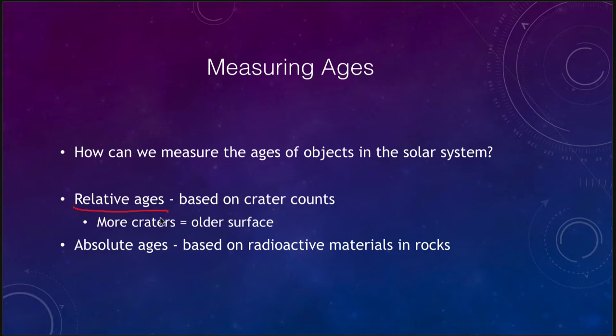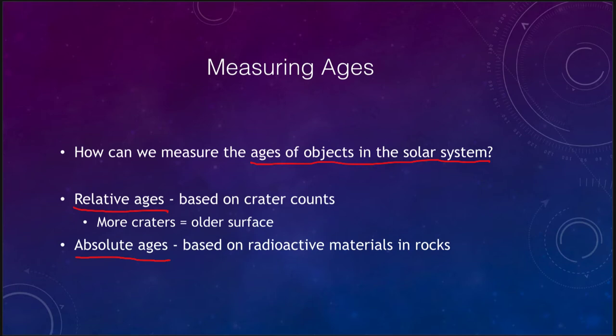A relative age would be one way to do it. That shows how things are related to each other, and the absolute ages are actual ages that we can determine. There are a couple ways we can determine how old objects are in the solar system by looking at them or by getting samples of them. Relative ages is done by looking at the object — you don't need a sample of anything — and it's essentially based on superposition.